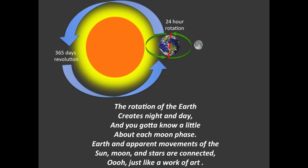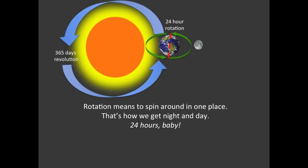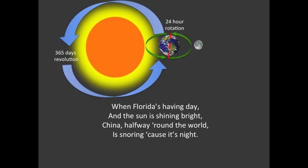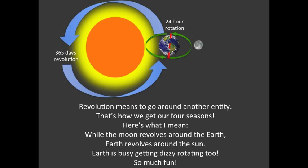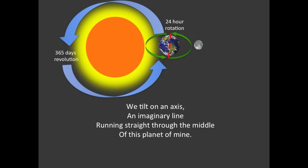Rotation means to spin around in one place — that's how we get night and day. When Ford is having day and the sun is shining bright, China halfway around the world is snoring because it's night. Revolution means to go around another entity — that's how we get four seasons. While the moon revolves around the earth, earth revolves around the sun.